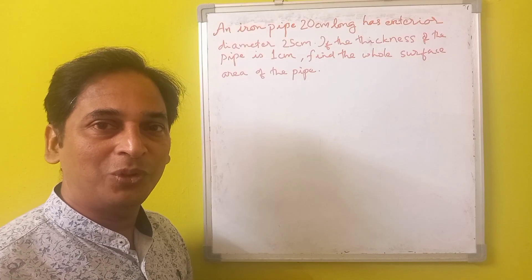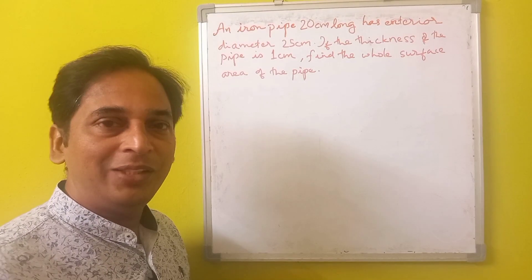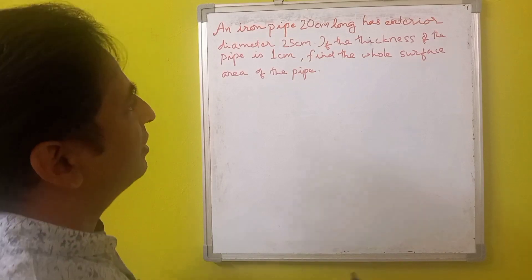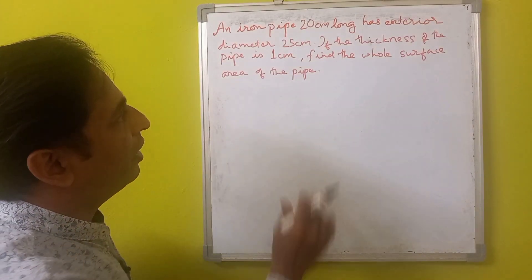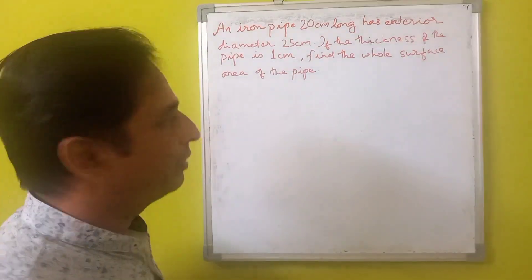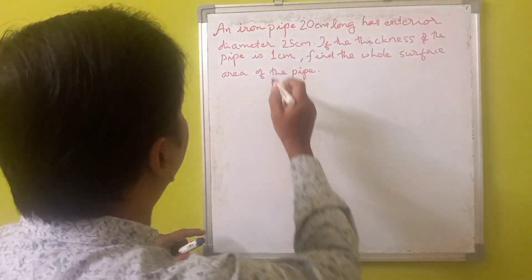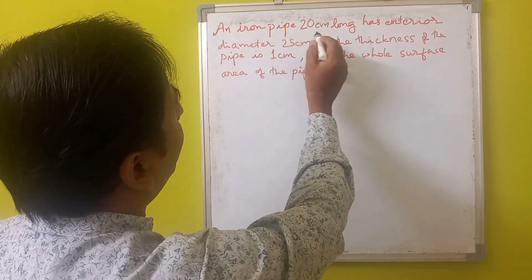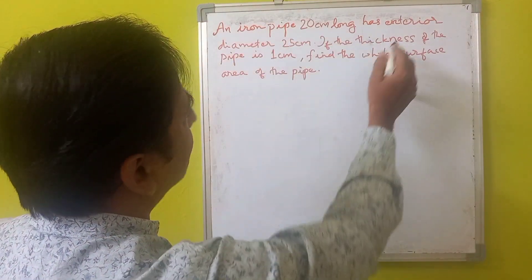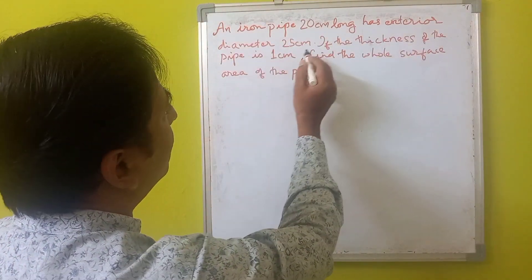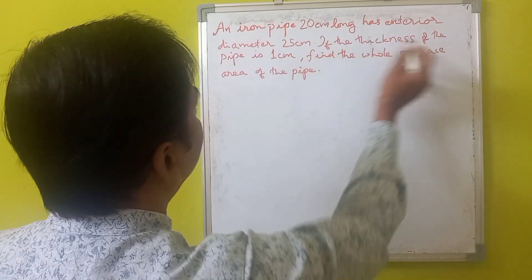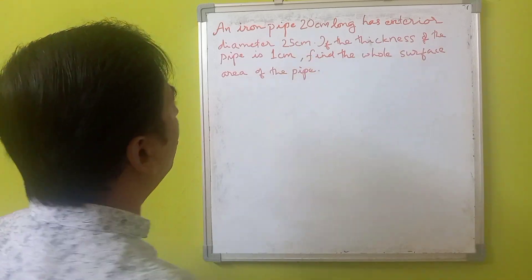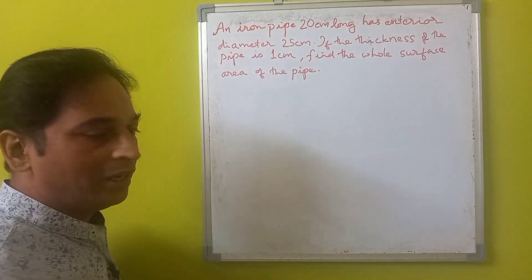Hi, this is Thomas. Welcome to School Maths. In this video we will try to find the surface area of a cylindrical pipe. In the problem, an iron pipe 20 centimeters long has an exterior diameter of 25 centimeters. If the thickness of the pipe is 1 centimeter, find the whole surface area of the pipe.